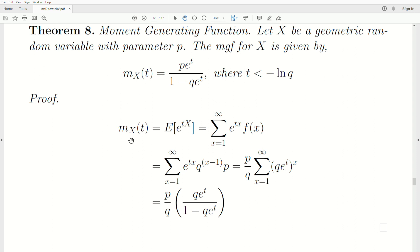Here's a quick proof. The moment generating function of X is defined as the expected value of E to the TX. And since this is discrete, you take E to the TX times the density summed over all possible values, which is one to infinity. We put in what the density is for F. Some might call it a probability mass function, but it's a density of the discrete type.